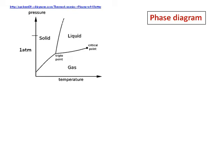Now, consider the pressure at one atmosphere. If I draw a line at one atmosphere and look at the point where the solid changes into liquid, that temperature is called the melting point. Similarly, if I extend the line to the point where the liquid becomes a gas, that temperature becomes the boiling point. All these things happen at one atmosphere.